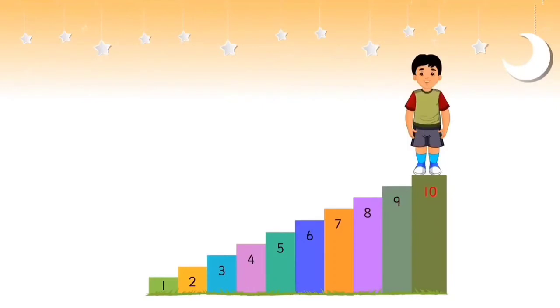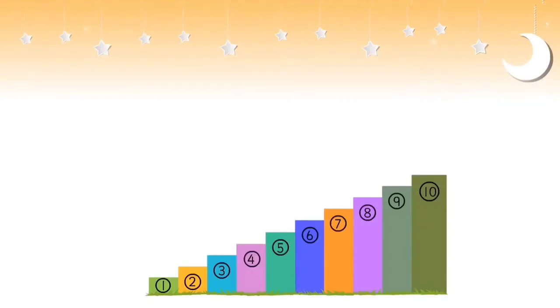Did you observe that as he climbs up each step, he is ascending or moving to a greater number than the previous number? Thus we say that when the numbers are arranged from the smallest to the greatest, they are in the increasing or ascending order.